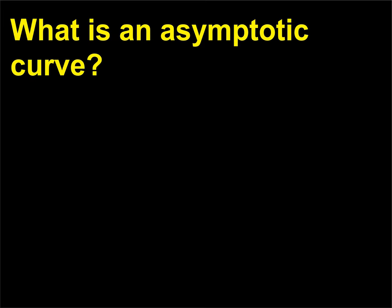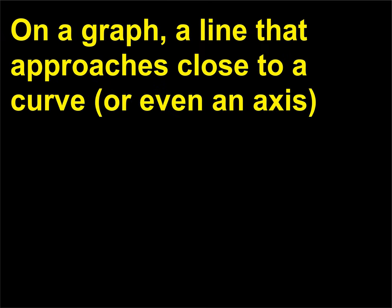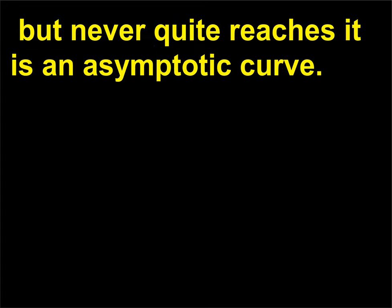What is an asymptotic curve? On a graph, a line that approaches close to a curve, or even an axis, but never quite reaches it is an asymptotic curve.